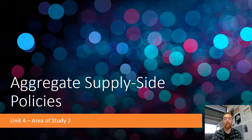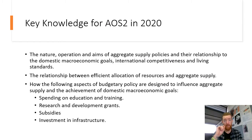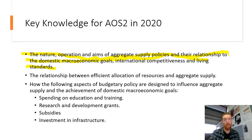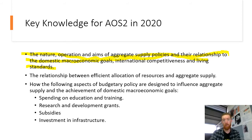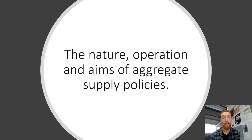To look at what we're going to cover today, let's move on to the key knowledge. We're going to be looking at the nature, operation, and aims of aggregate supply-side policies and their relationship to domestic macroeconomic goals, international competitiveness, and living standards. Next time we'll look at the relationship between allocation of resources and aggregate supply, and then lastly how the government uses those four things to influence supply.